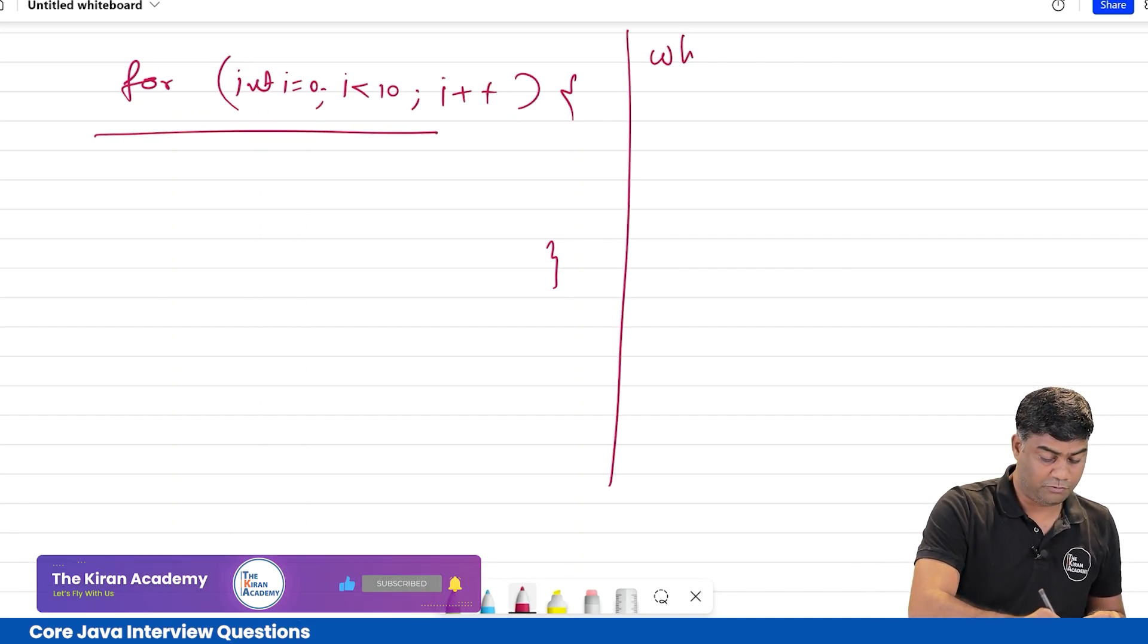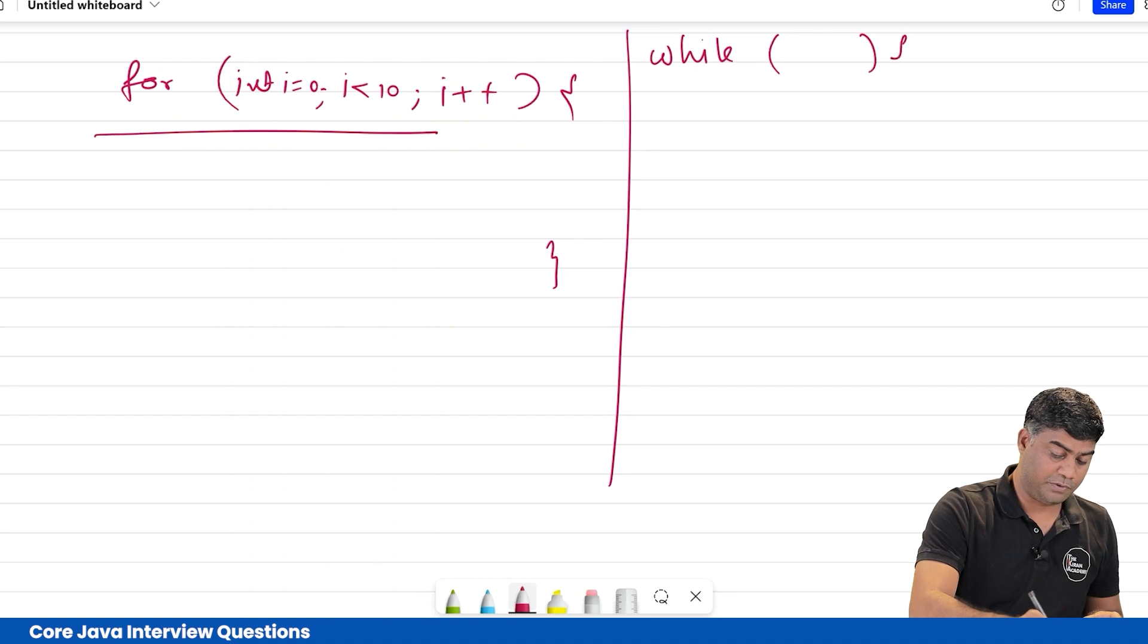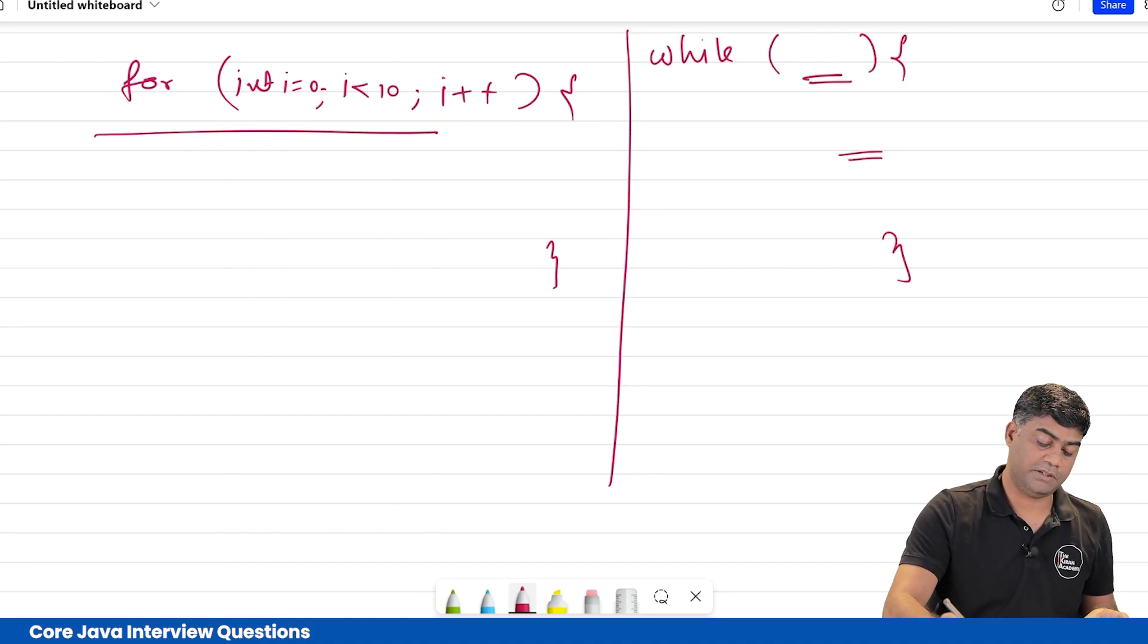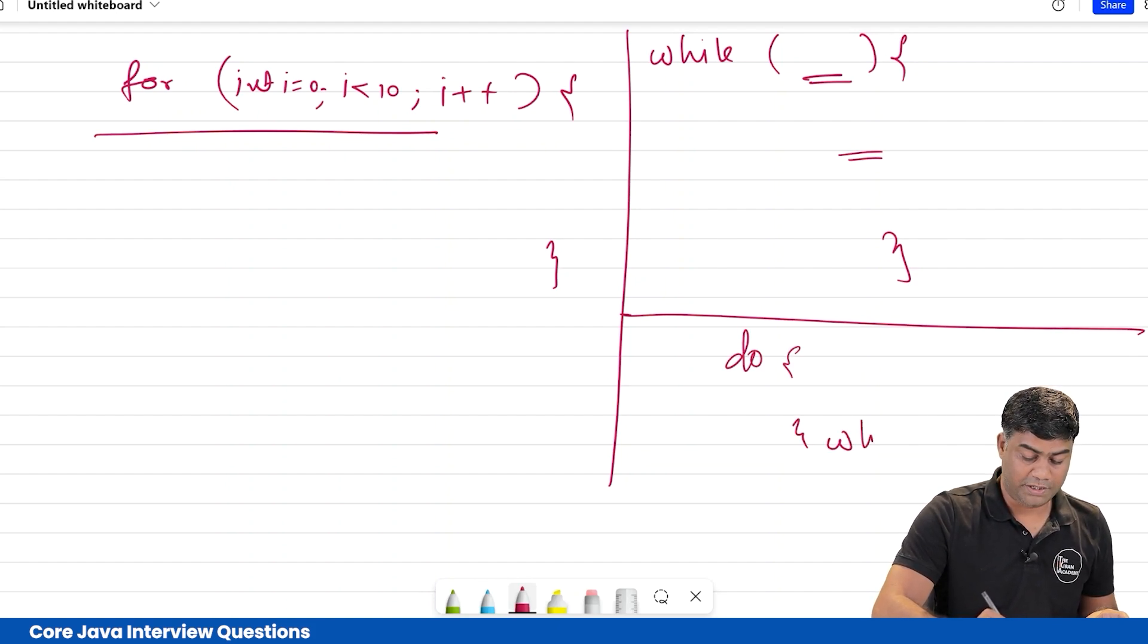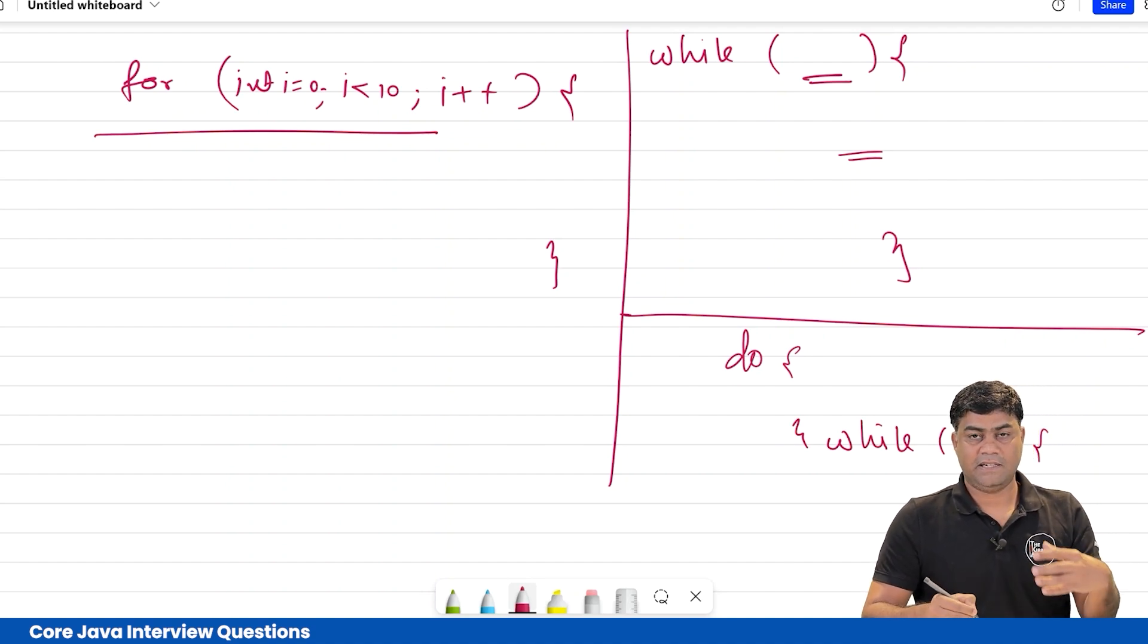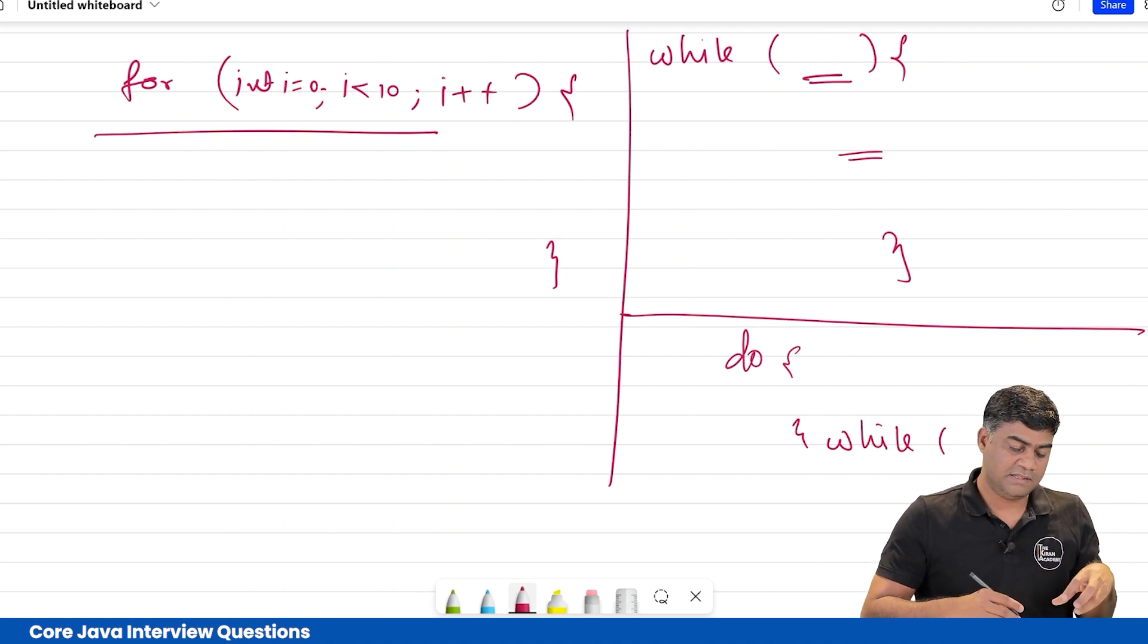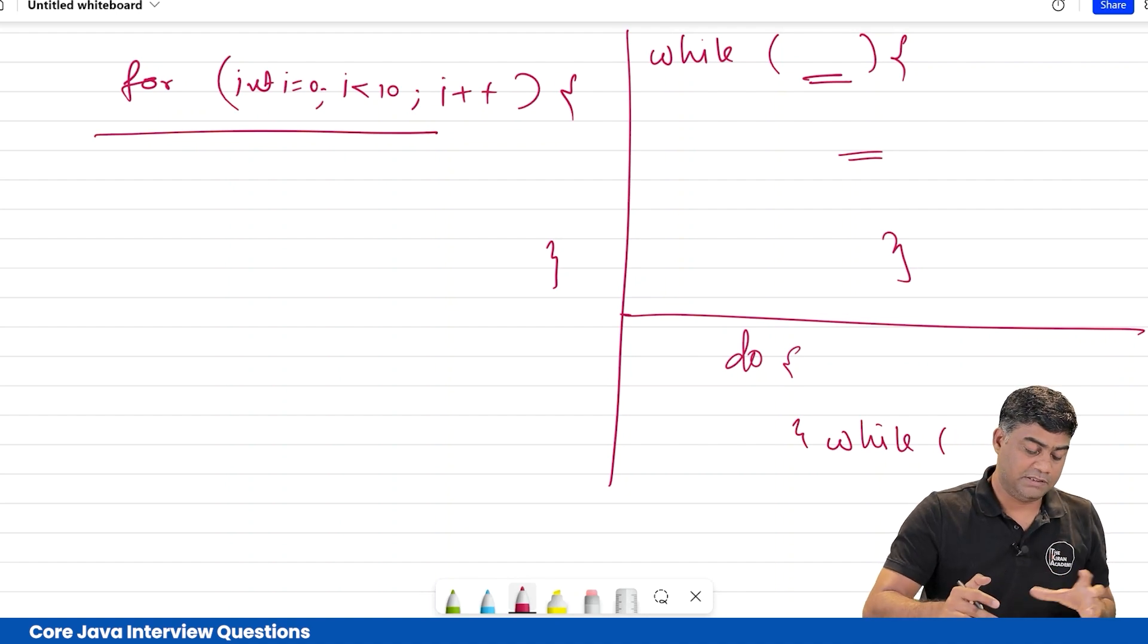While loop: you write while with some condition, and then some logic. Do-while: you write do, then while with some condition. So first of all, this is the syntax. Now in this question, it has been asked: can we explain all of these?